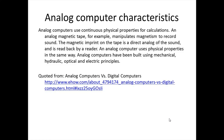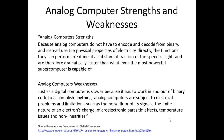An easy-to-understand example is the difference between how data is encoded on a CD and a vinyl record. The CD is digital, encoded with a pattern simulating binary code read by a laser. The vinyl record is a direct analog of the data — the stylus put into the vinyl record sets up vibrations that are amplified and produce sound, with that sound encoded directly as vibrations in the vinyl itself. Because analog computers do not have to encode and decode from binary and instead use the physical properties of electricity directly, the functions they perform are done at a substantial fraction of the speed of light and are dramatically faster than even the most powerful supercomputer.